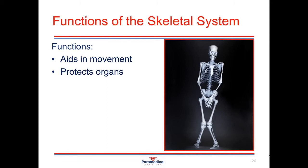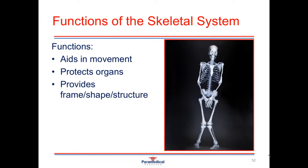We have bones that protect vital organs. The cranium protects the brain. The spinal vertebra protect the spinal cord running down the back. We have the pelvic cavity protecting all the reproductive organs, and the thoracic cavity which protects our vital organs such as our heart, our great vessels and our lungs. Our skeleton provides our shape, our structure and our framework to our body — we look the way that we do because of the formation of our particular skeleton.